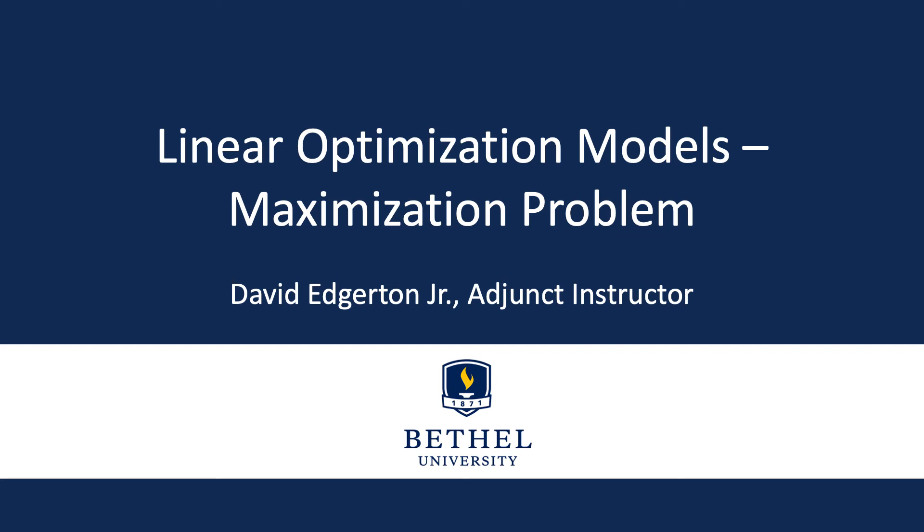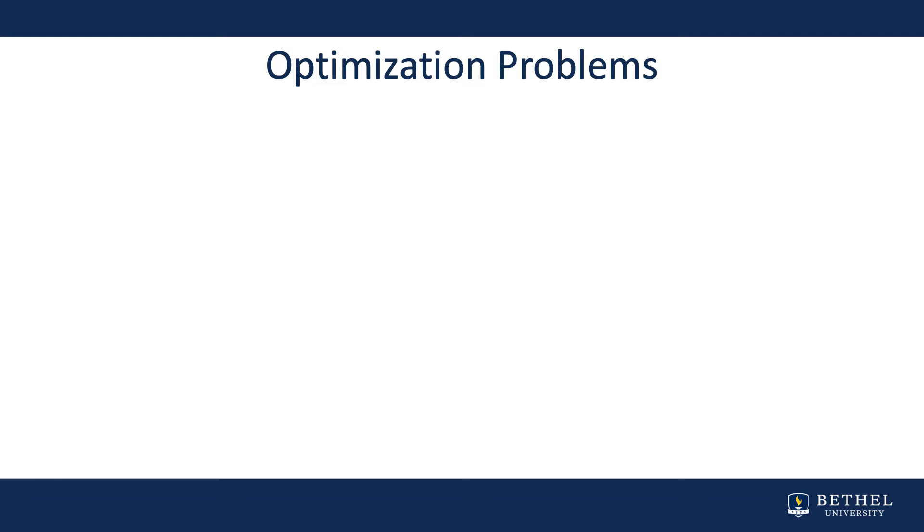Now we want to talk about linear optimization models. Optimization is one of the things that you would want to do whether you're leading a company, running a small group, or working in a non-profit or school. Optimization simply means that you want to get the best out of the situation. When we look at business analytics and how we use these tools, we come up with scenarios that we want to optimize — we'll call those optimization problems.